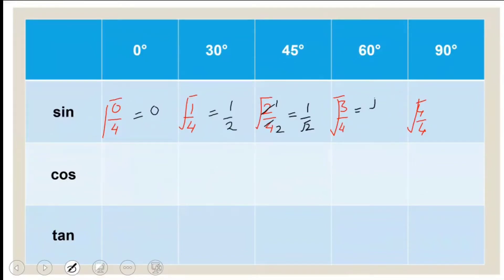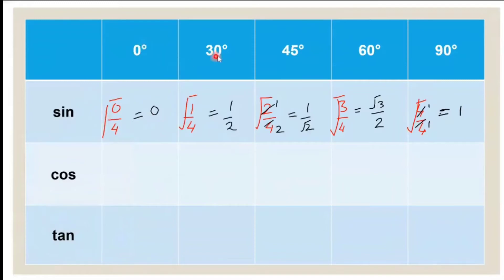Square root of 3/4: square root of 3 is √3 and square root of 4 is 2, so we get √3/2. Square root of 4/4: this simplifies to 1, and square root of 1 is 1. So the sine values are: sin 0° = 0, sin 30° = 1/2, sin 45° = 1/√2, sin 60° = √3/2, and sin 90° = 1.